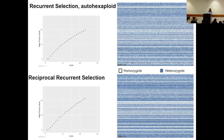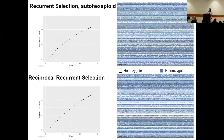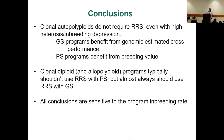In conclusion: clonal autopolyploids do not need RRS even with high levels of heterosis. Heterosis does not automatically mean hybrid breeding. If using genomic selection, consider using a genomic estimated cross performance rather than a standard breeding value. With phenotypic selection, standard breeding values work well, and hybrid breeding is not useful even in diploids due to cycle length penalties. All conclusions are sensitive to program-specific breeding rates. I'm happy to discuss further during office hours, and I can help set up AlphaSimR or point you to scripts for genomic prediction of cross performance. Thank you.